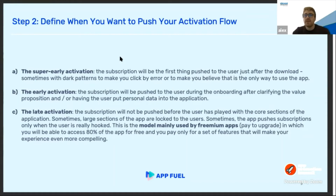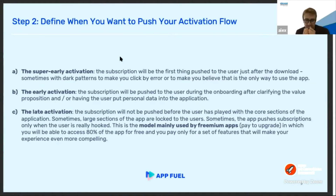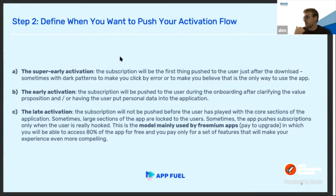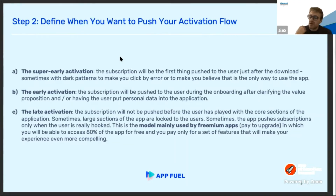The second step of the framework: where do you push your activation flow? By activation flow I mean the sequence where you will pitch the app to the user and, at the end, display your pricing page to get them to subscribe. There are three main ways to push your subscription. The first is super-early activation — pushing the activation flow as soon as the user opens the app. This means either the user was educated before downloading, or, less commonly seen now, dark patterns.